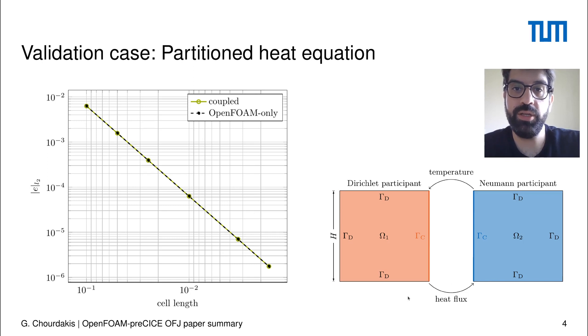This is a Dirichlet-Neumann coupling, exchanging temperature and heat flux, but Robin-Robin coupling is also possible.